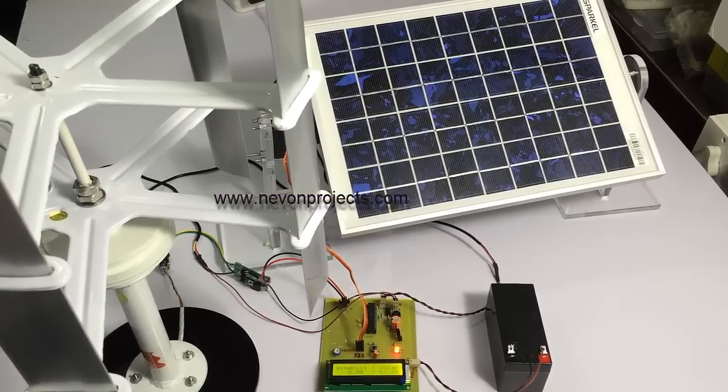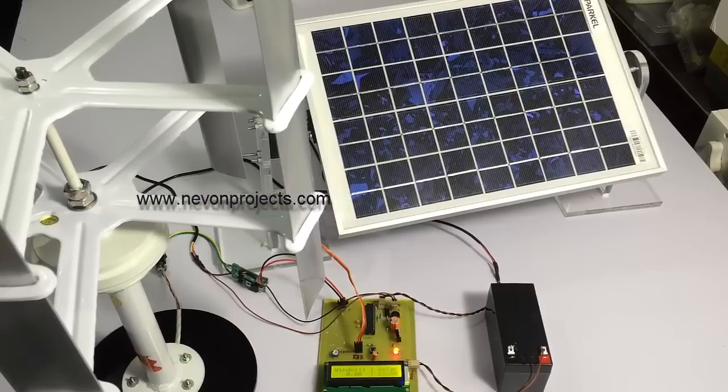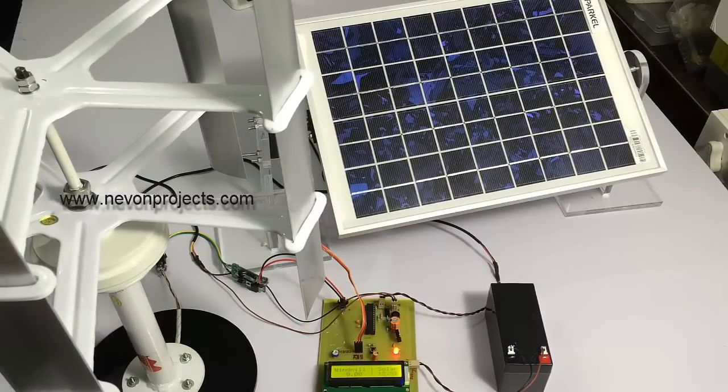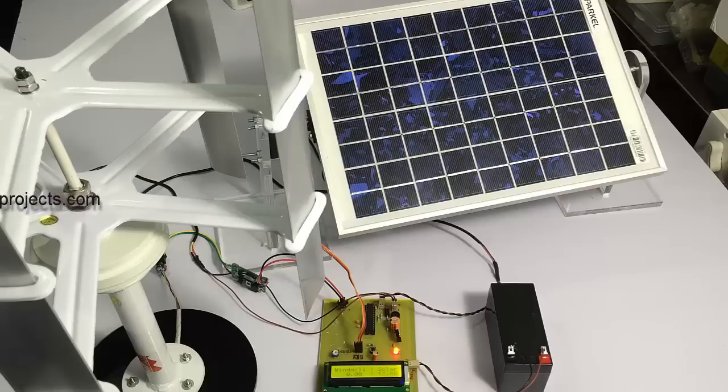Because the sun's position keeps changing through the day, it monitors the solar intensity angle after a particular time period from time to time to get the maximum voltage throughout the day. This is how the system works, thank you.